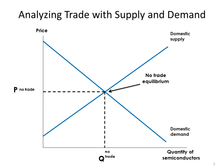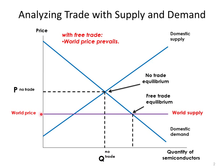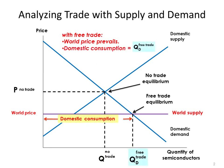Now suppose that consumers in this country can go out into the world and buy as much of these semiconductors as they want at the world price. With complete free trade, consumers would be able to buy as much as they want at the world price, as given by the world supply curve. The free trade equilibrium involves greater consumption — at the lower world price, quantity demanded increases to QD free trade.